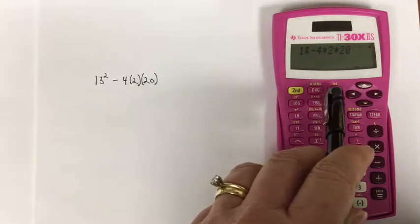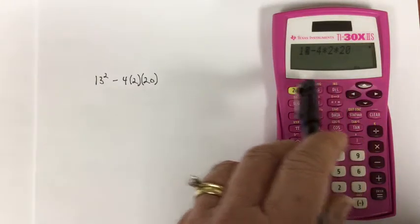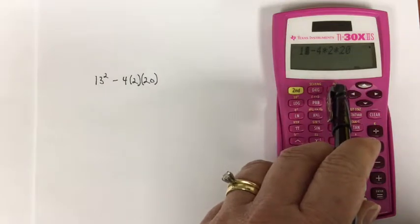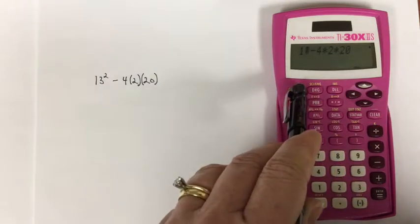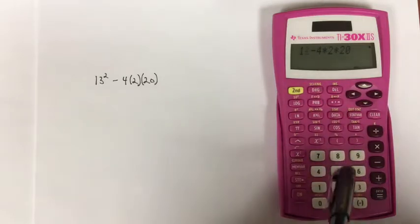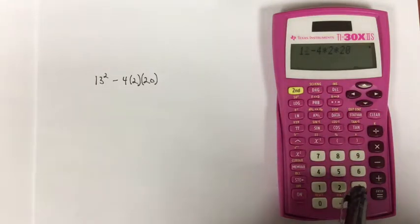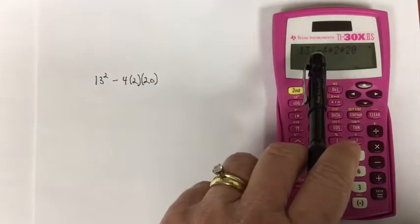To do that, notice that the second function of the delete key is INS, so that stands for insert. If I say second delete, that puts me in insert mode, and now I can enter the 3 without writing over the next character. And notice how the cursor has changed.